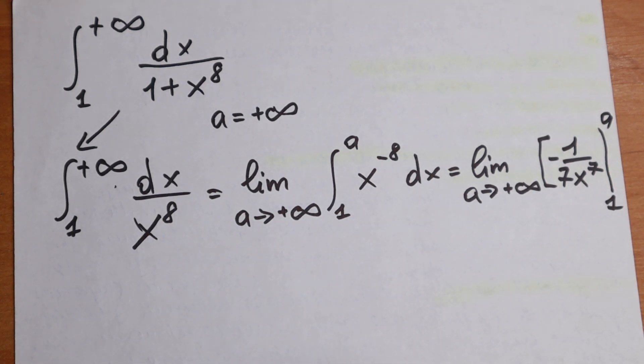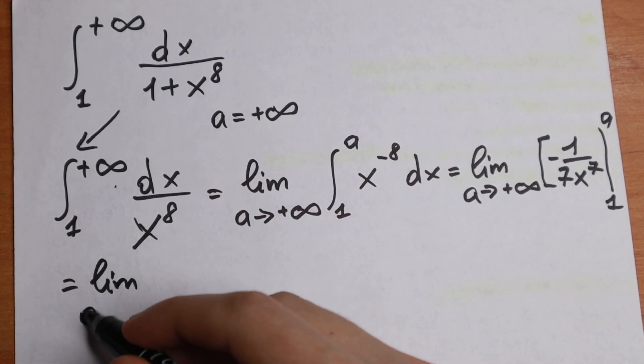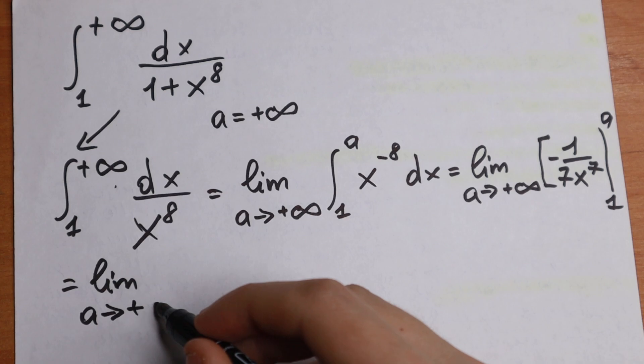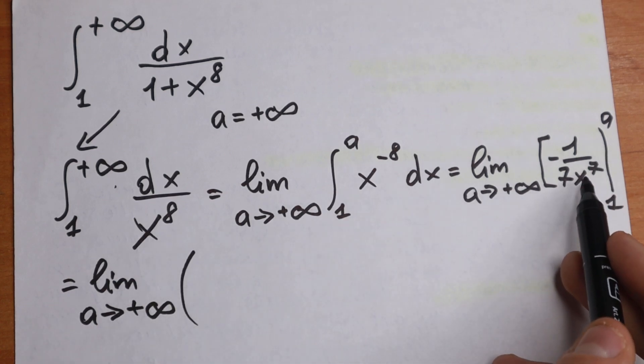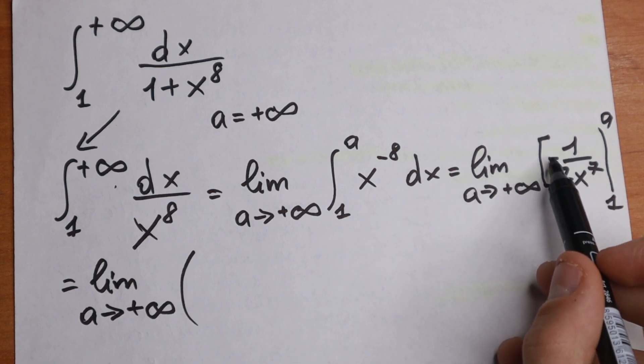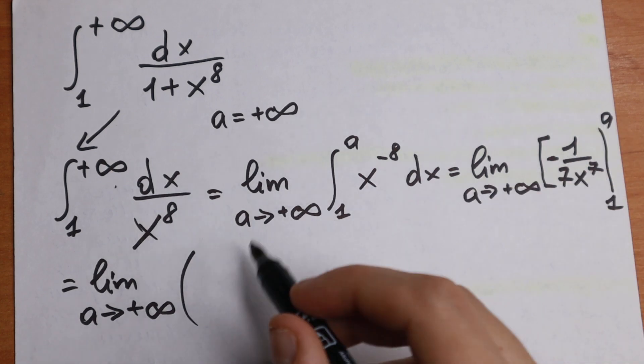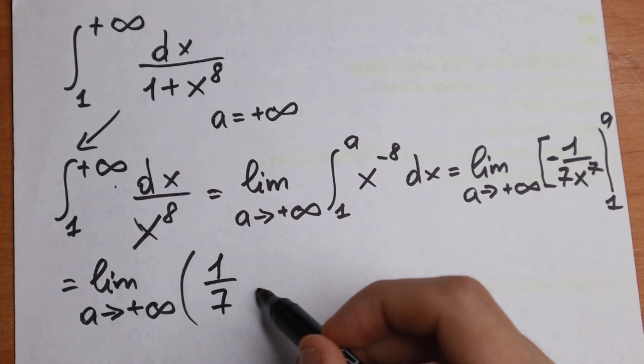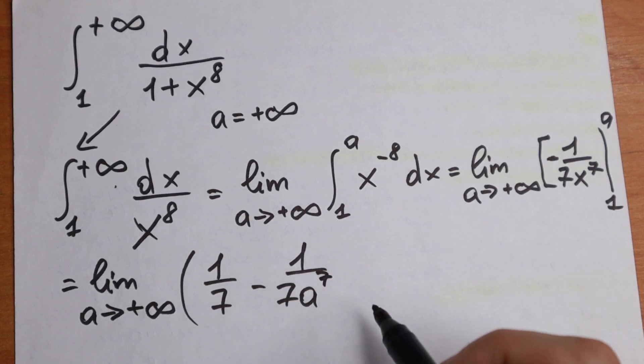And let's put these measures in to see what we will have. This limit will be equal to the limit as a approaches plus infinity of... put this first, 1 and a. With this minus we just put first this measure and after that this one. We will have 1 over 7 minus 1 over 7a to the 7th power.